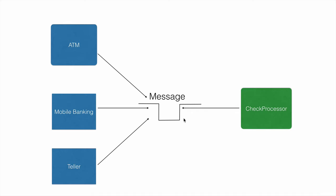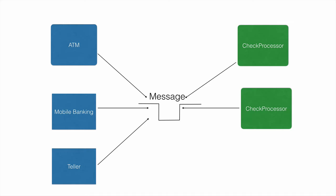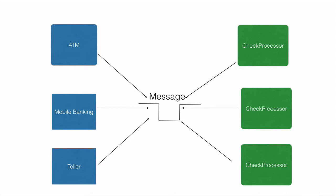Tomorrow if we have too many checks coming in, we can always scale our application by deploying it to multiple servers and all those applications can read from the same destination, or we can have multiple destinations as well. We can have parallel processing in place.